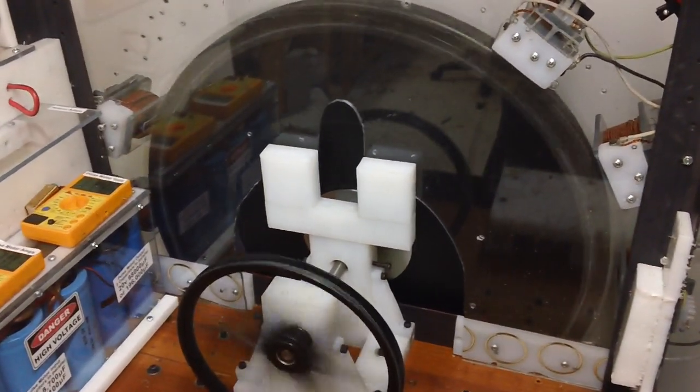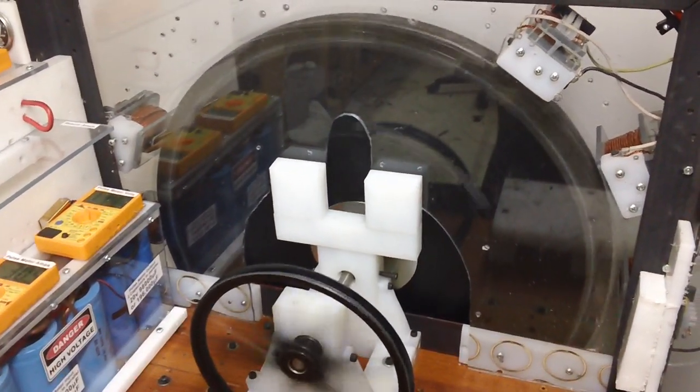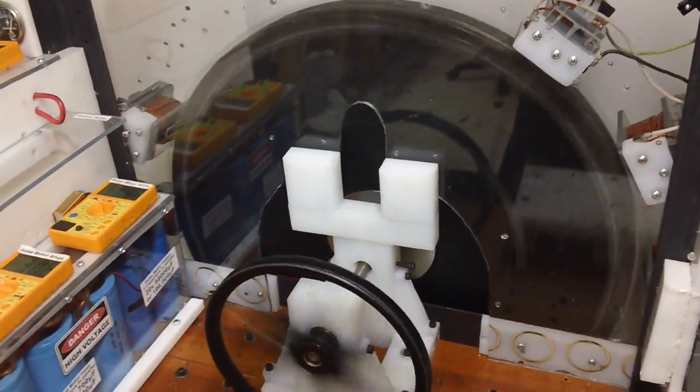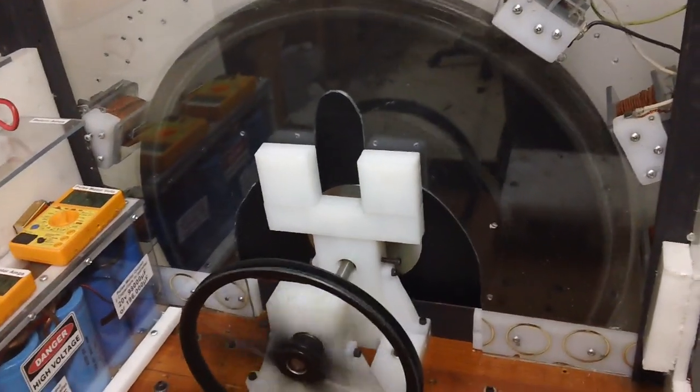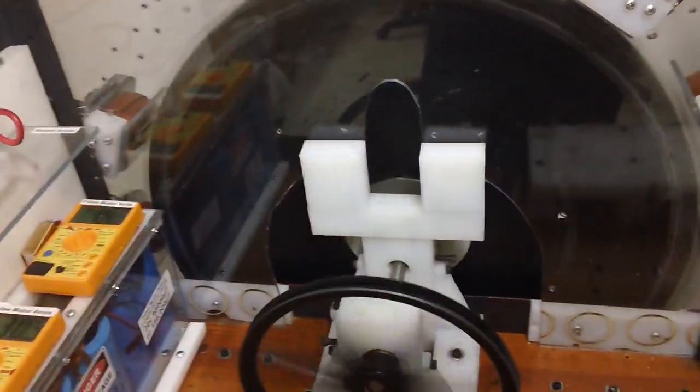But because the armature already has the angle built into it, the coil has to go straight across like it does in a conventional generator. So there are a few changes, but this concept will work just fine on a conventional electric motor armature.